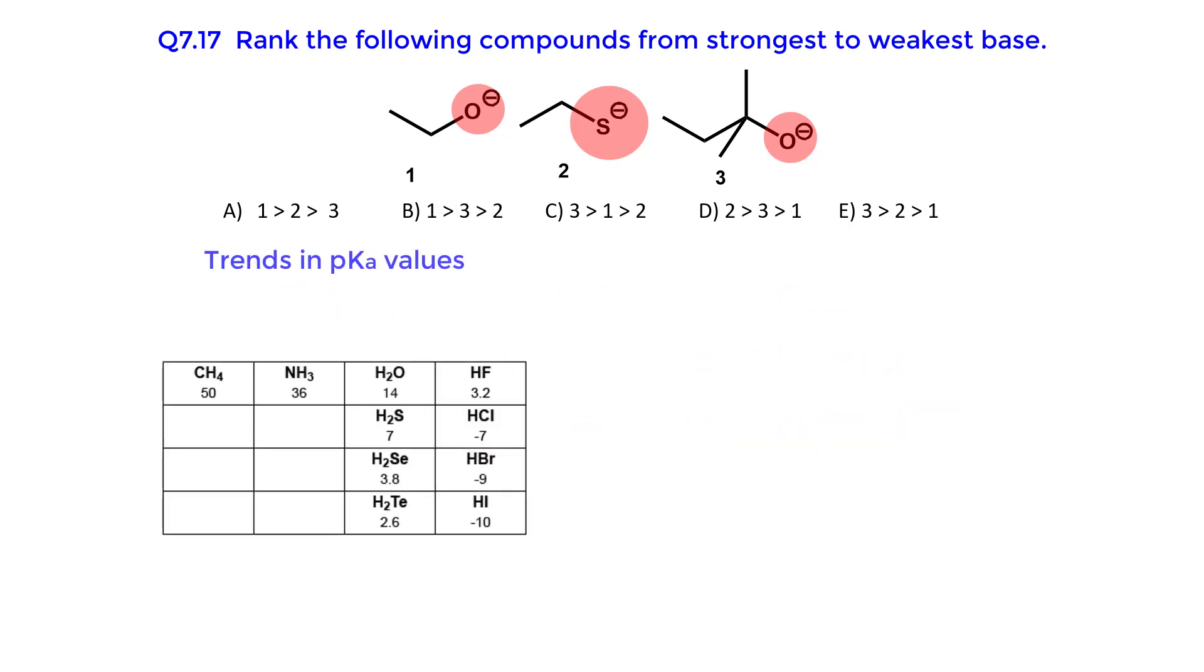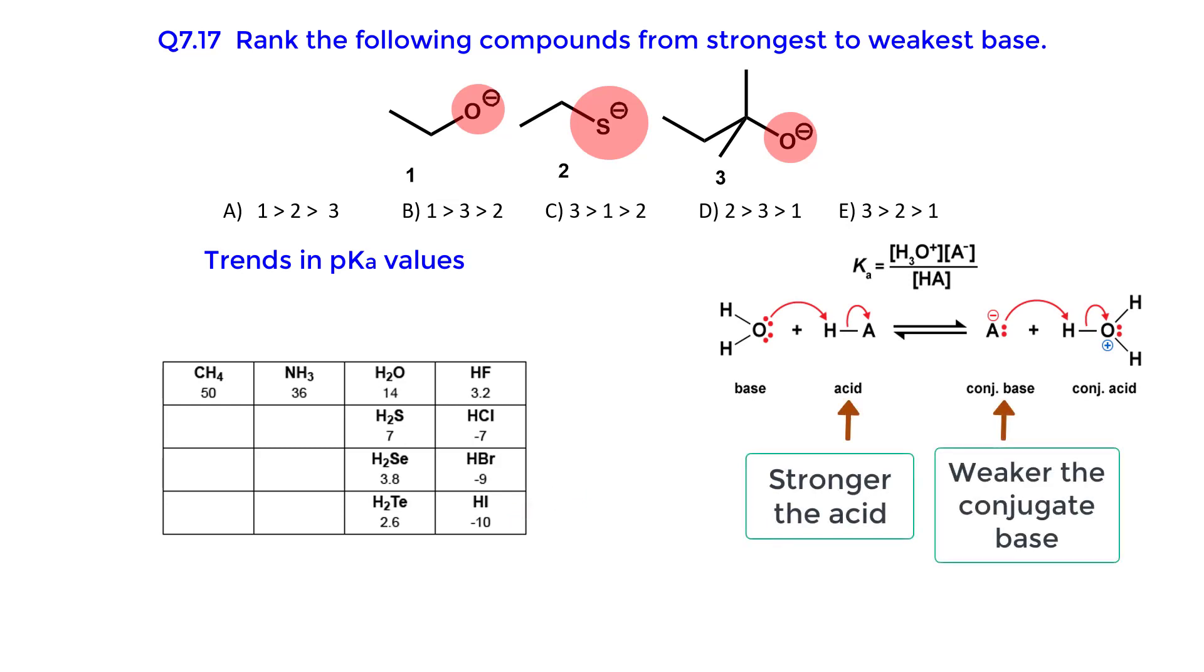Looking at this table of pKa values, you can see that as we go from left to right in the periodic table, the pKa values decrease, and the compounds become more acidic. The pKa values also decrease as we go down the periodic table. Remember, from chapter 4, the stronger the acid, the more the equilibrium is shifted to the products, and the weaker the conjugate base.